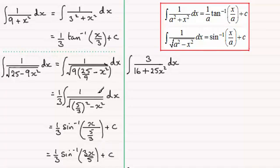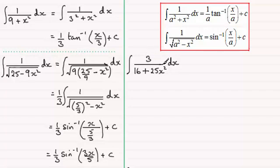So that's how we handle the case where we haven't got just a 1 or minus 1 in front of the x squared. The same approach applies to the third example, where we've got 25 in front of the x squared instead of just a 1. Also in this example there's a factor of 3 in the numerator, but that's not a problem — we just pull that 3 out in front of the integral.